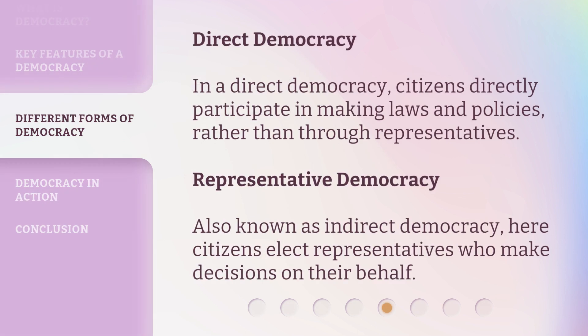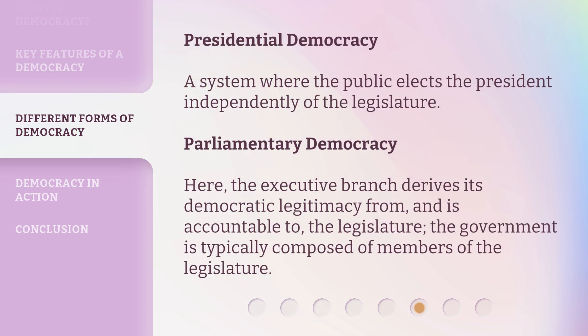Direct Democracy: Citizens directly participate in making laws and policies, rather than through representatives. Representative Democracy, also known as indirect democracy: citizens elect representatives who make decisions on their behalf. Presidential Democracy: A system where the public elects the president independently of the legislature. Parliamentary Democracy: The executive branch derives its democratic legitimacy from, and is accountable to, the legislature, and the government is typically composed of members of the legislature.